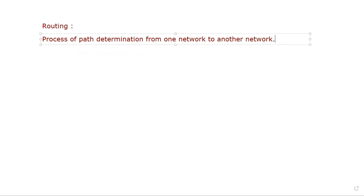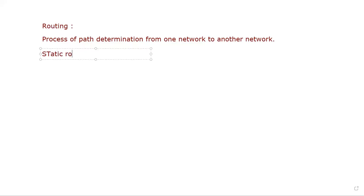For example, you have configured networks like 10, 20, 30 and you want to connect all the networks with each other — then you need routing. In routing you will learn three processes: static routing, default routing, and dynamic routing.